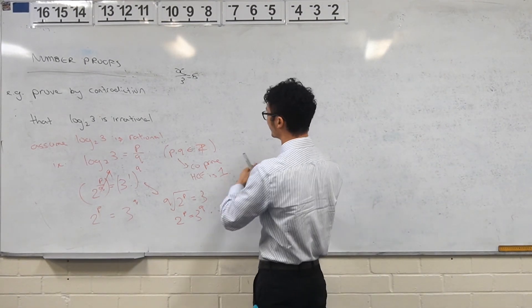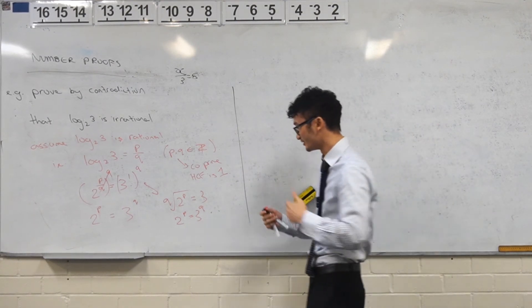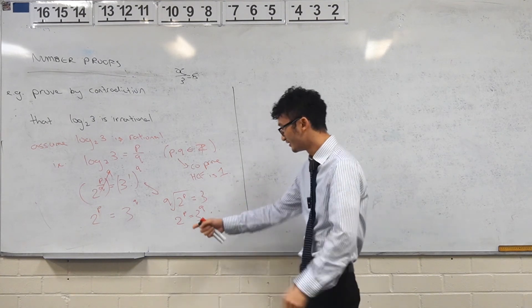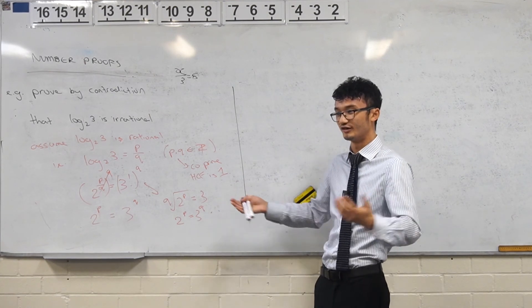And so here, I think we've done enough to say that there's a contradiction, right? Because 2 to the power of something should always be, you've done that in binary, right? It should be an even number, yeah? Because you're just multiplying even numbers together. And 3 to the power of something, that should always be an odd number. And so there's a contradiction, right?